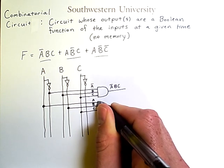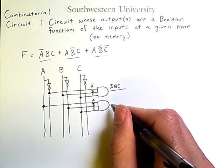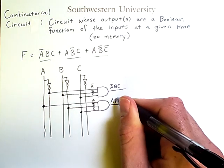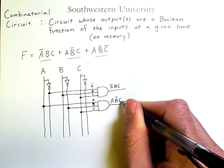Combine these using a single AND gate for the three inputs. We have A and NOT B and C.